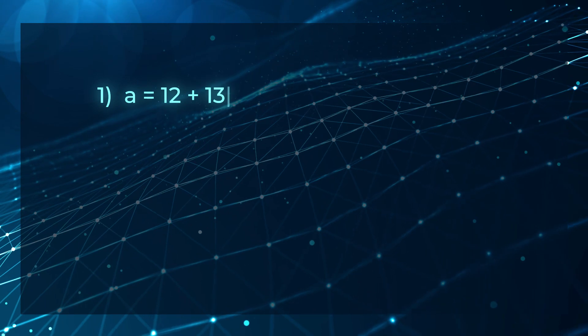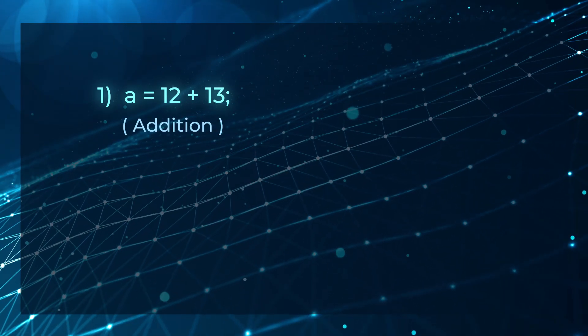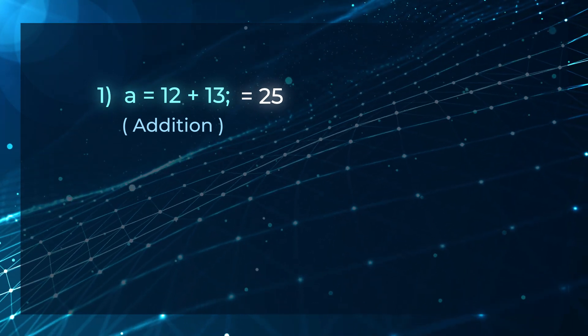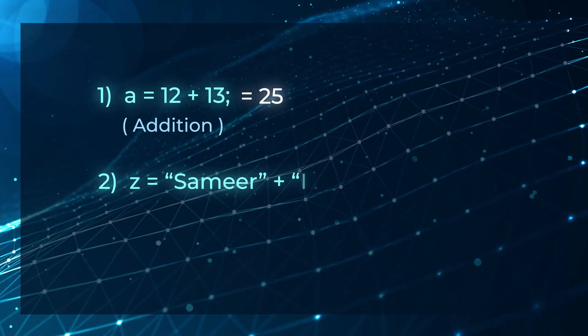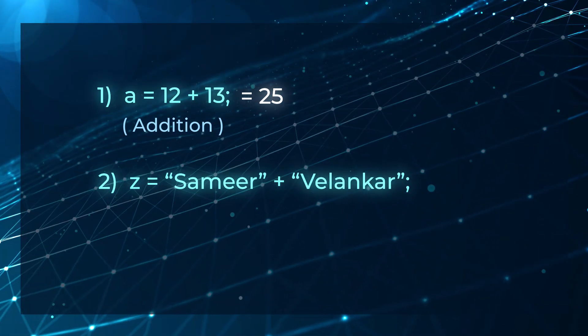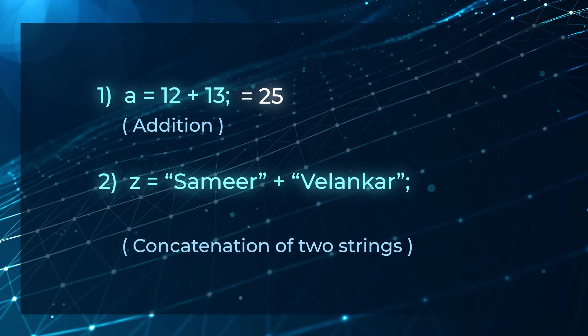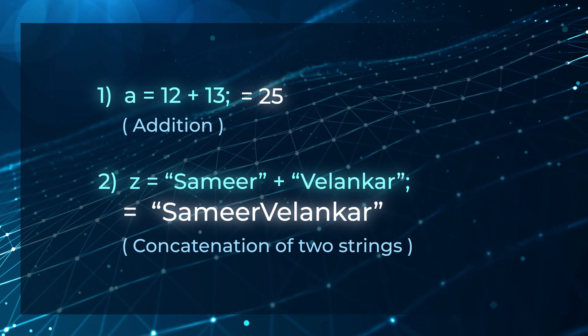To understand what is polymorphism, have a look at two sentences written in Java programming language. The first sentence says a equals 12 plus 13. Anybody can understand that this is sheer addition — 12 is added to 13 to make 25. But look at the second line: z equals "Samir" plus "Velankar". The plus operator there does not add Samir with Velankar, but it joins the two strings — we call this concatenation. Hence z becomes the single string "Samir Velankar".